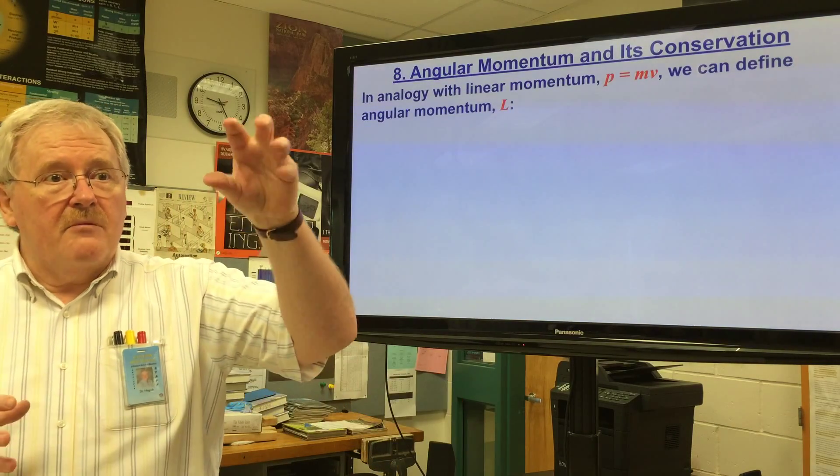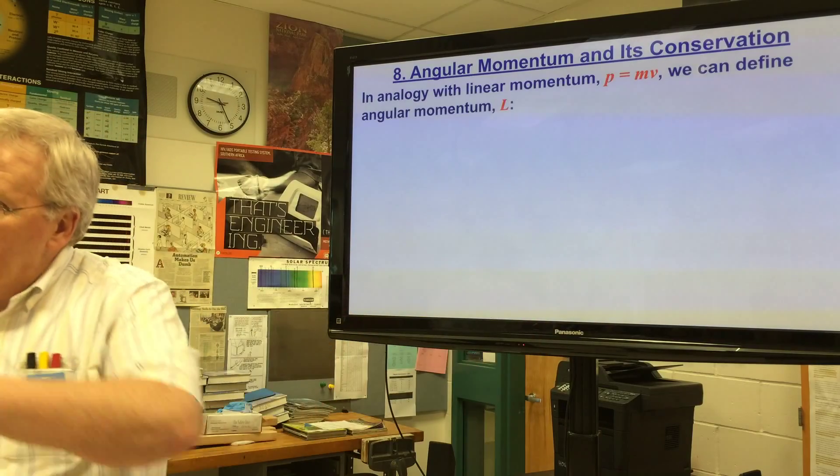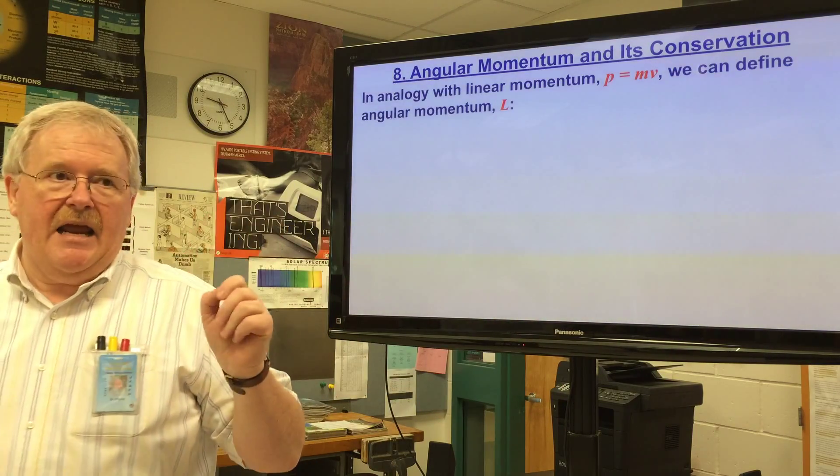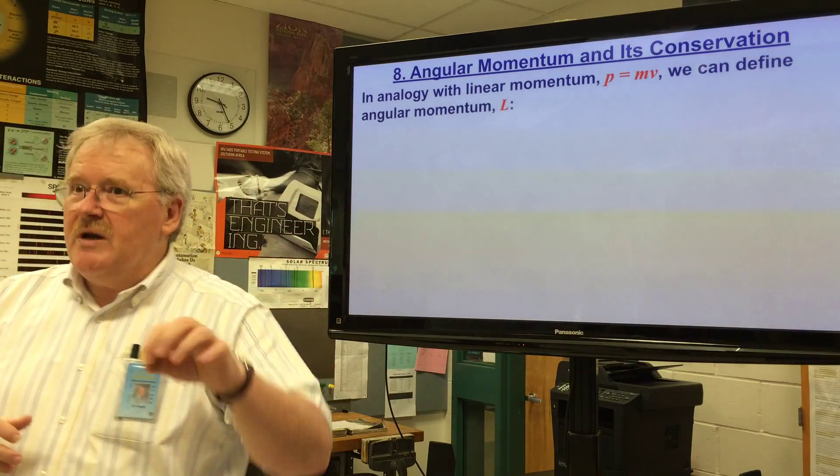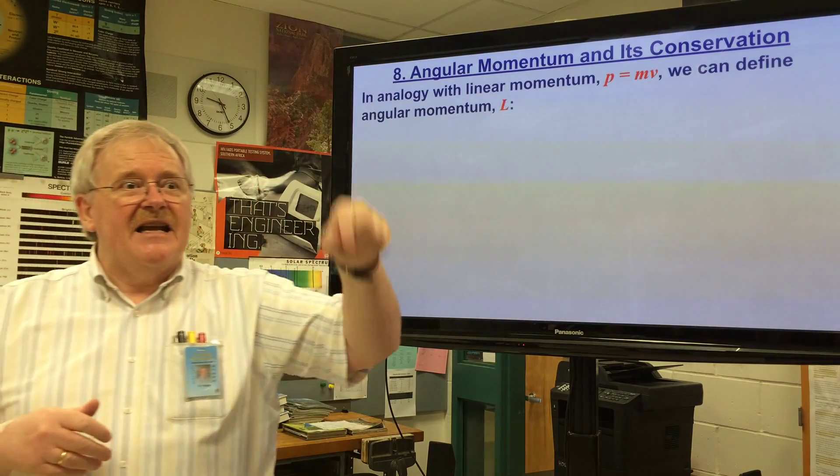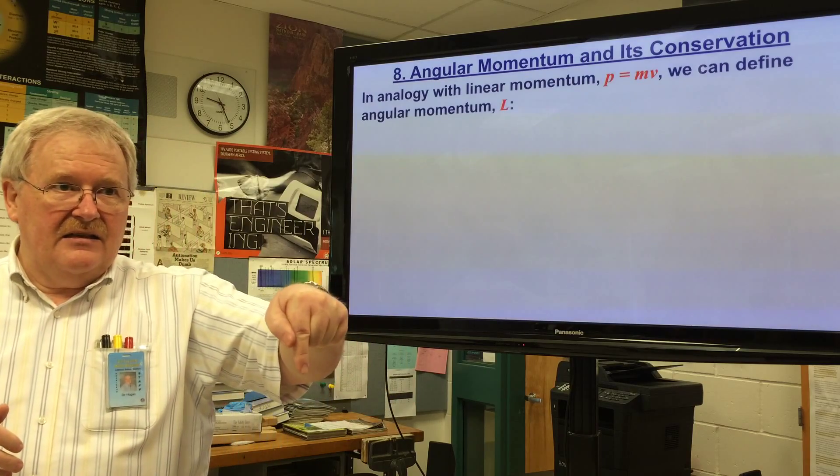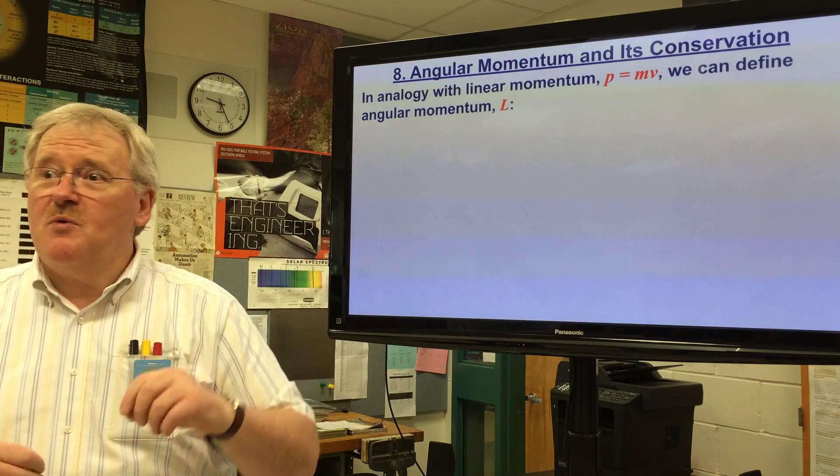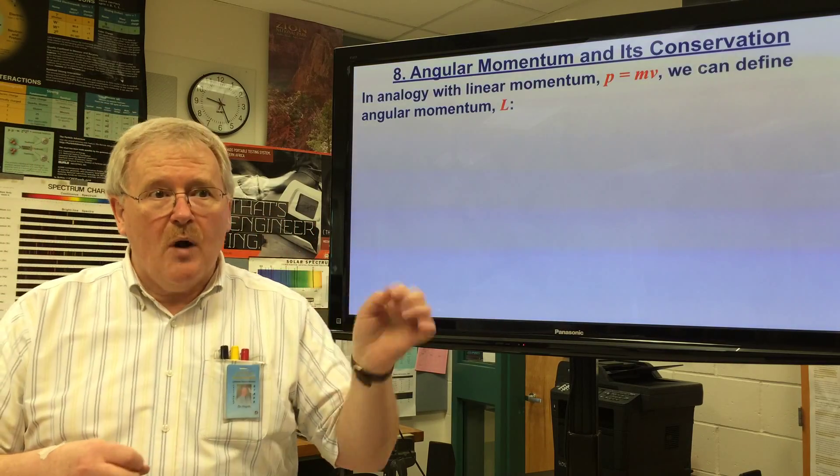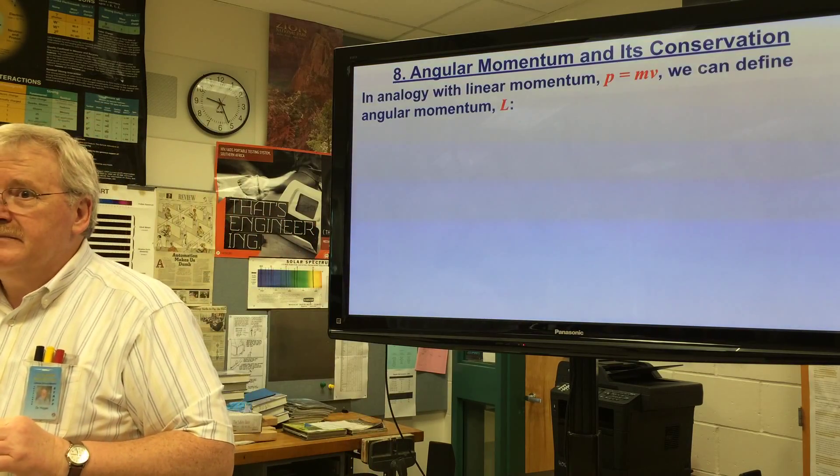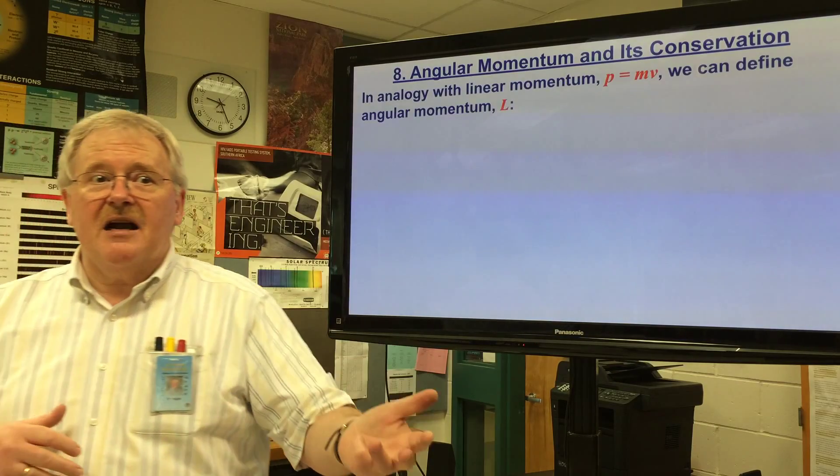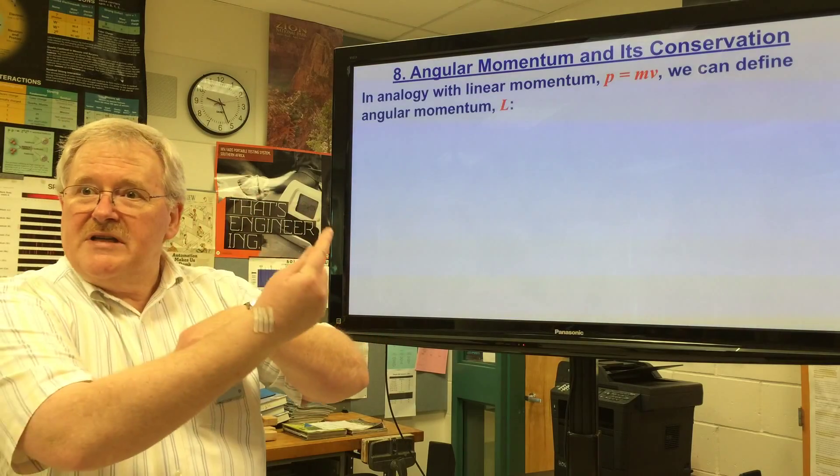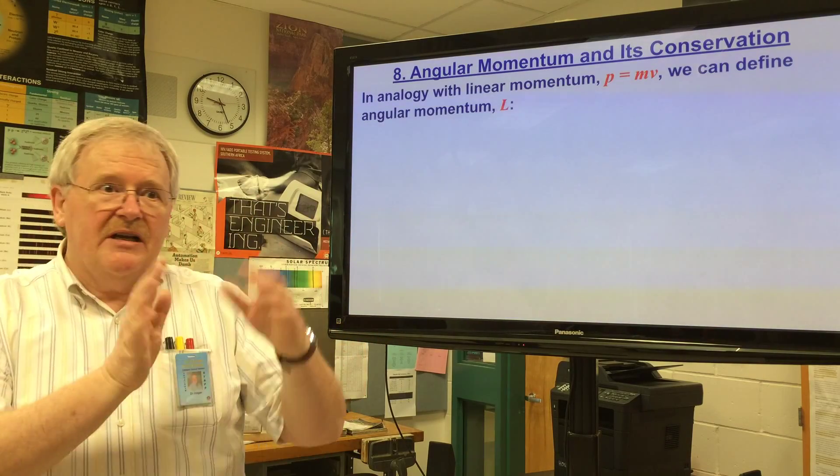And the other type is what we'll call orbital angular momentum. Orbital angular momentum would be something like the Moon going around the Earth. The Moon will have an angular momentum going around the Earth, but it also has a spin angular momentum. In fact, it just so happens the Moon spins on its axis exactly once every time it goes around the Earth, which is why we only ever get to see one side of the Moon.